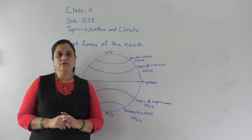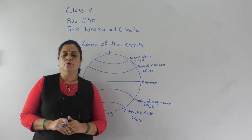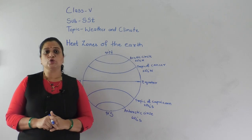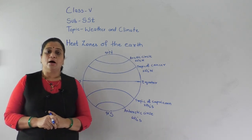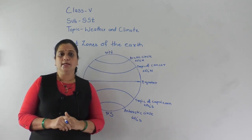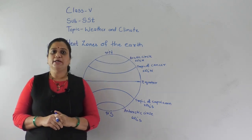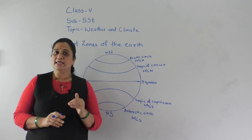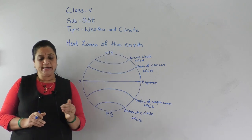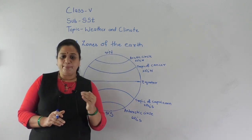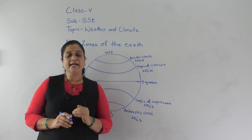Today we are going to study about the heat zones of the Earth. As you know, the sun is the only source of heat for all the planets of the solar system. Our Earth is 150 million kilometers away from the sun. The amount of heat received from the sun is different in different parts of the world.